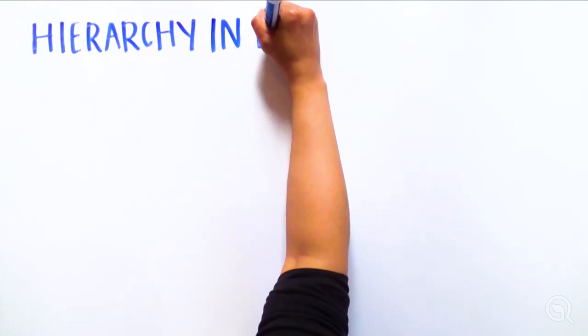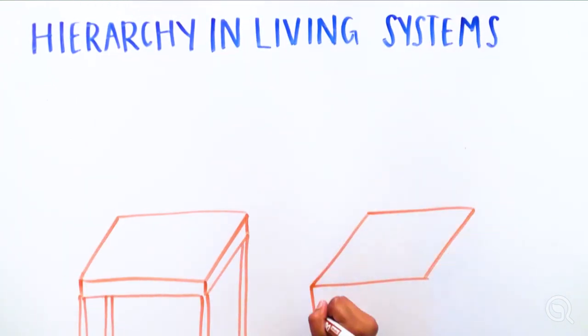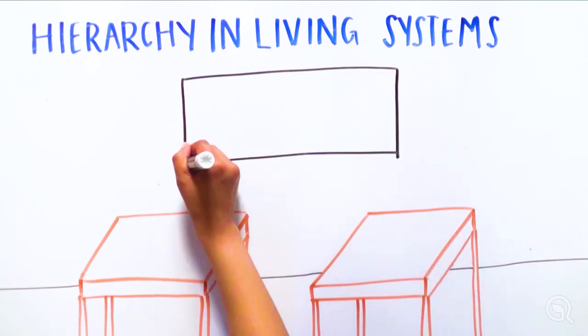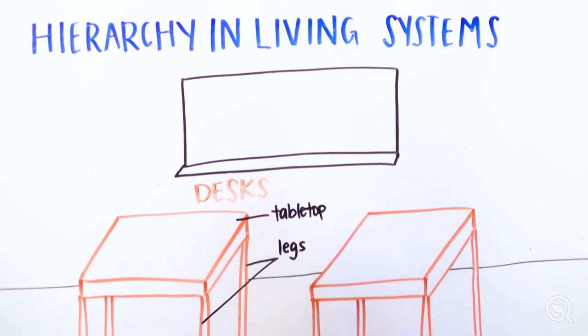Now let's think about living systems which are organized as a hierarchy. Consider a school with classrooms. Within each classroom are desks, and each desk is made of legs and a tabletop. Every larger thing is made up of smaller things, and each level has specialized structure and function.